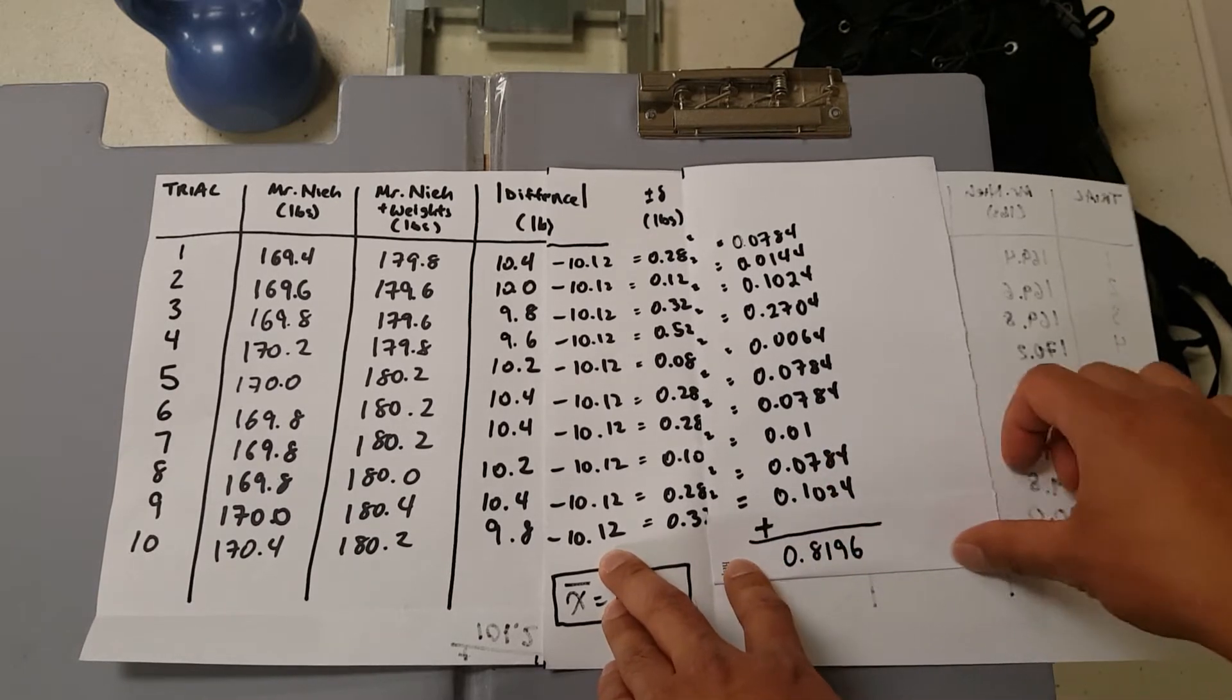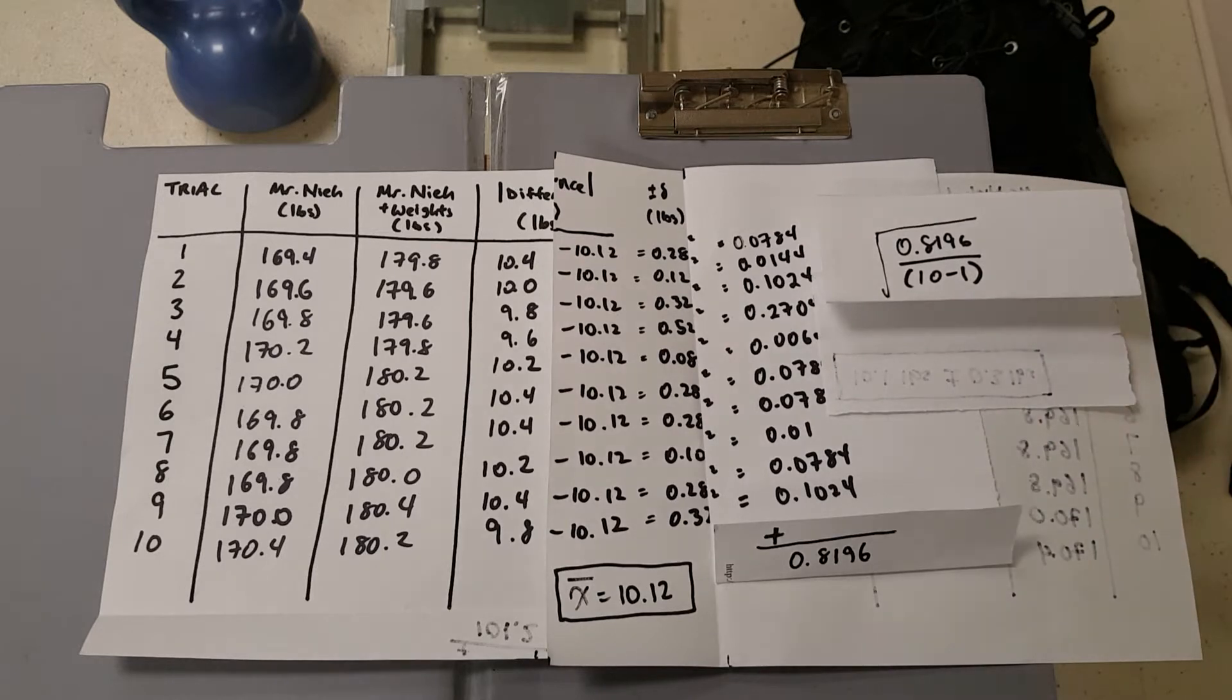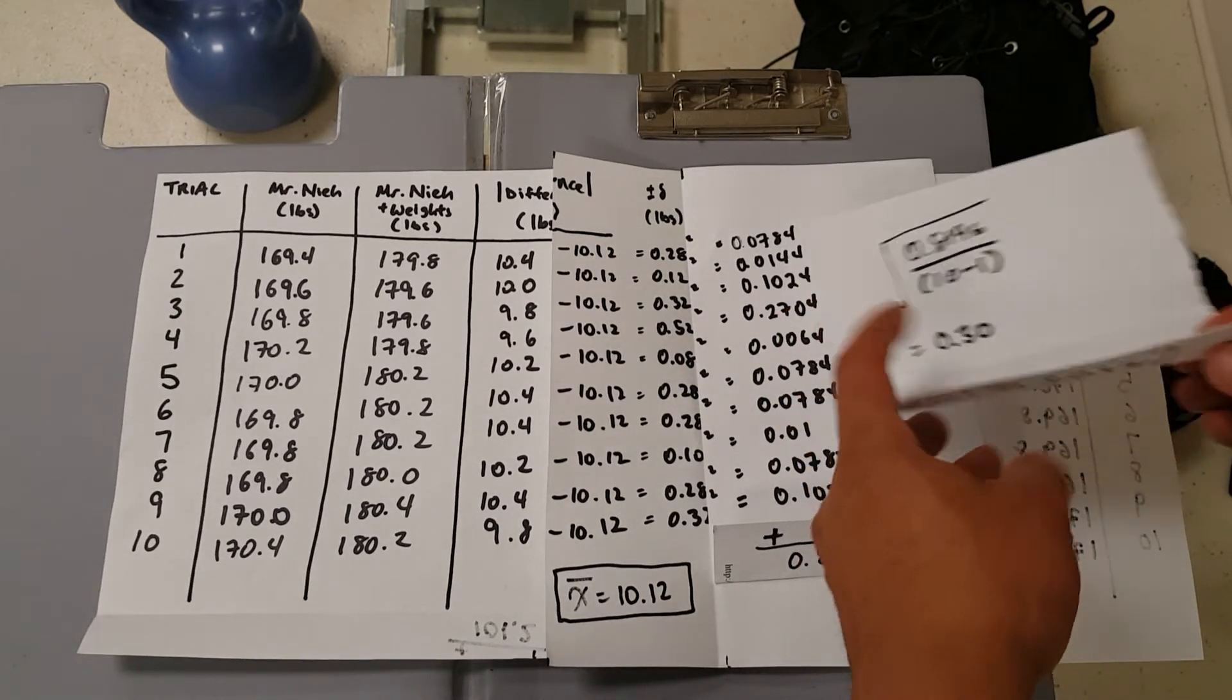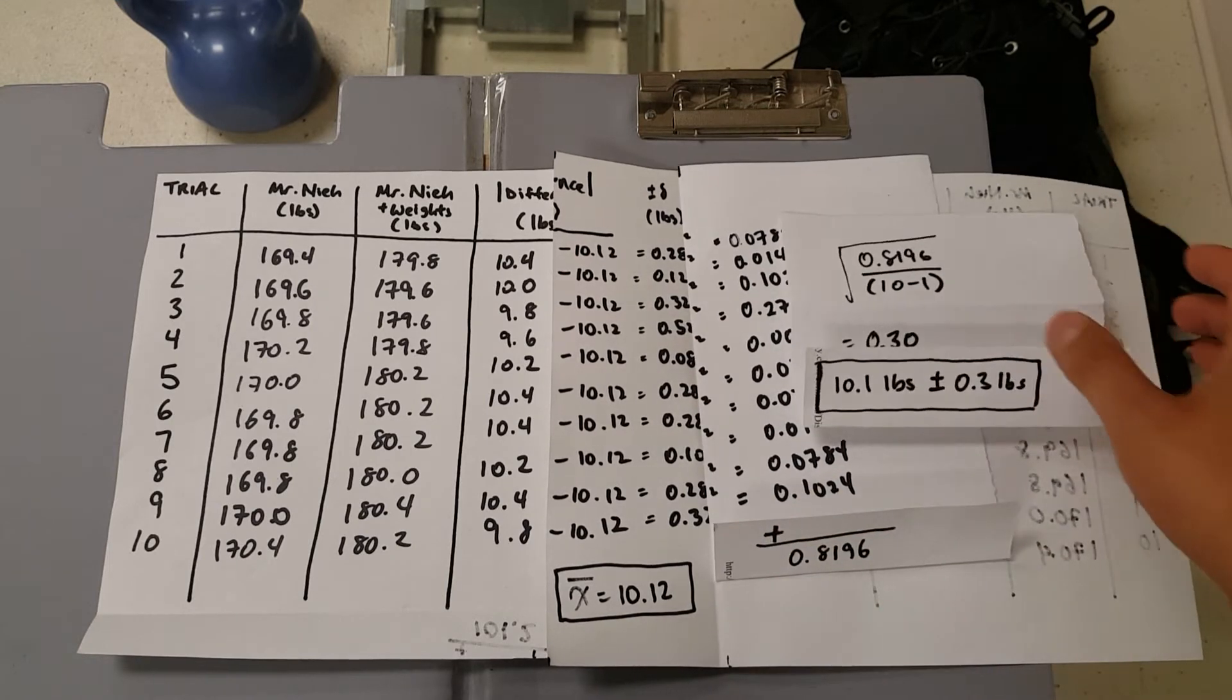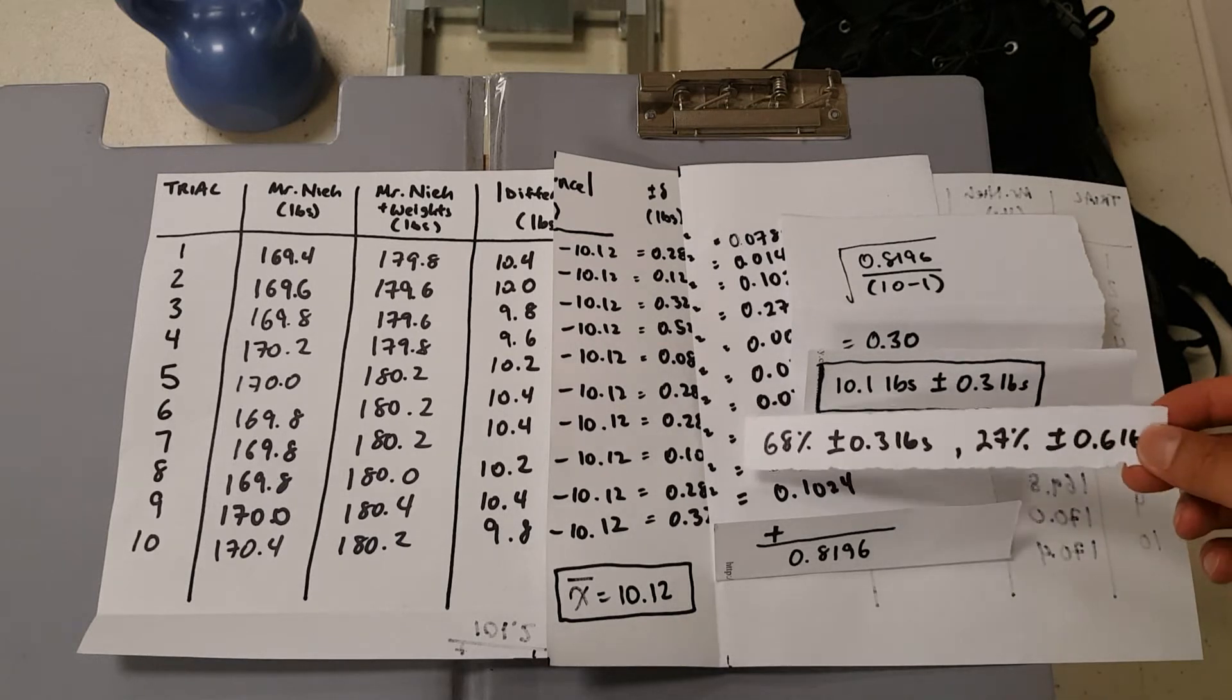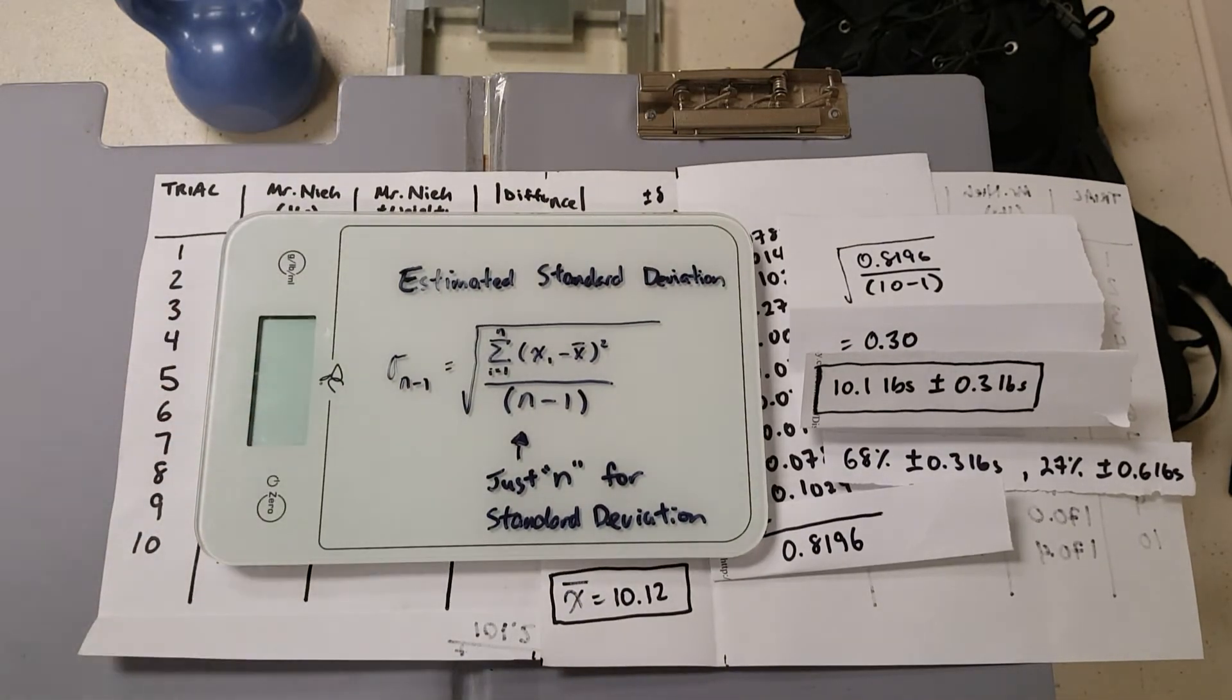We add it all up together and that gives us 0.8196. We take the 0.8196 and we divide it by the number of entries subtract 1 or by 9 entries. And then we square root it. That will give us an answer of 0.30. What that 0.30 tells us is that our measurement of 10.1 pounds as our average has a standard estimated deviation of 0.3 pounds, or an uncertainty of 0.3. And that 0.3 would exist 68% of the time. 95% of the time, the deviation would then double to plus minus 0.6 pounds.